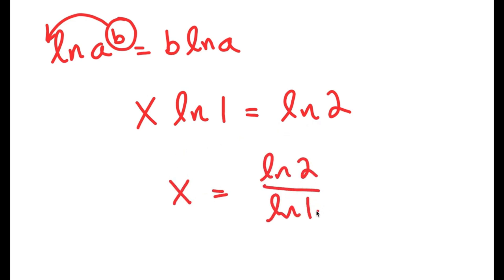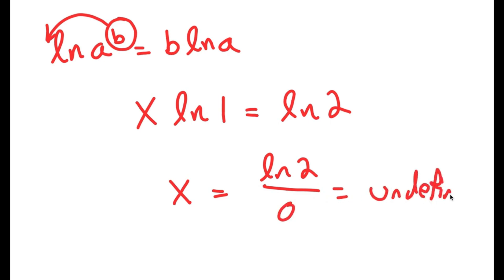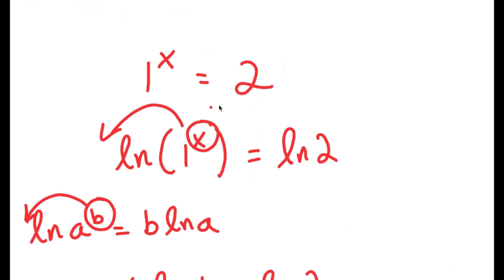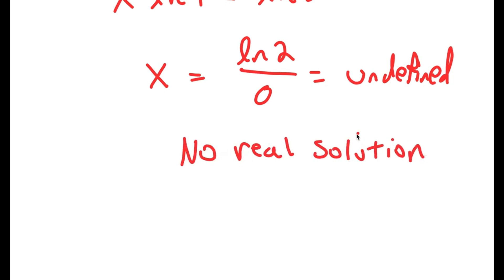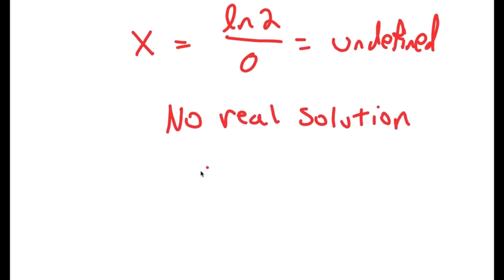You may be thinking we could just divide both sides by ln(1), and x would equal ln(2) over ln(1). However, the only problem with this is that ln(1) is equal to 0. And remember, anything divided by 0 is undefined — so this would be undefined. We know that this equation has no real solution, but it could still have imaginary solutions.